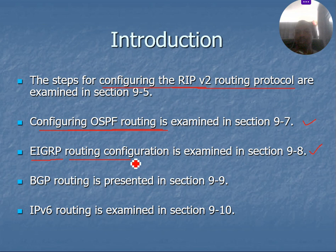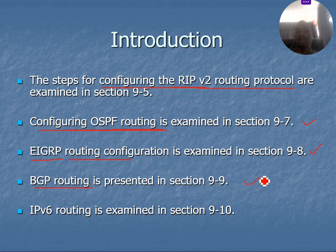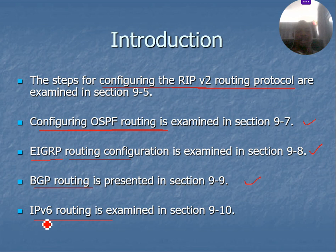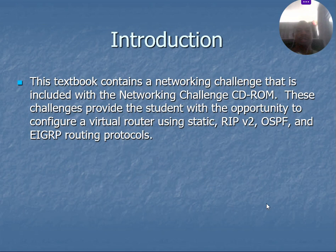Then we look at the BGP — the Border Gateway Protocol routing protocol — covering its meaning, configuration, and so on. The last part, section 10 of this chapter, covers the IPv6 routing protocol: its meaning, configuration, style, and advantages of why we're using it.